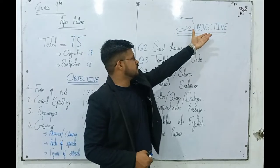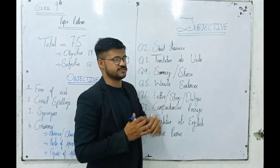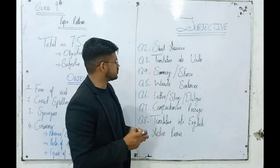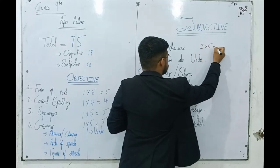Next, subjective section. We have short answers - 8 questions, attempt any 5, 2 marks each. Two multiplied by 5 equals 10 marks total.